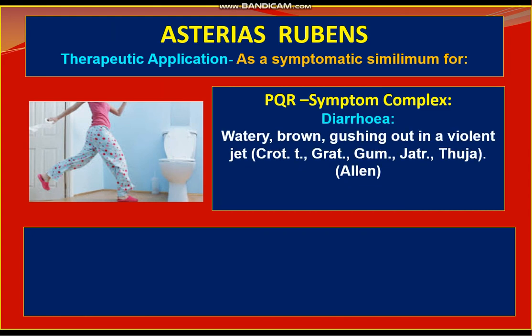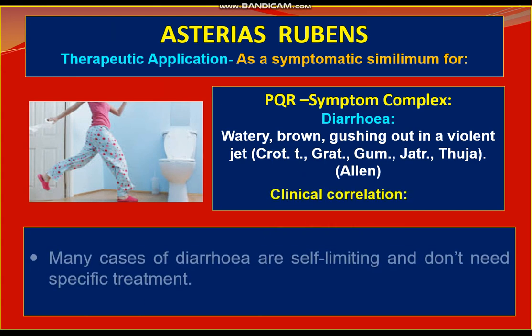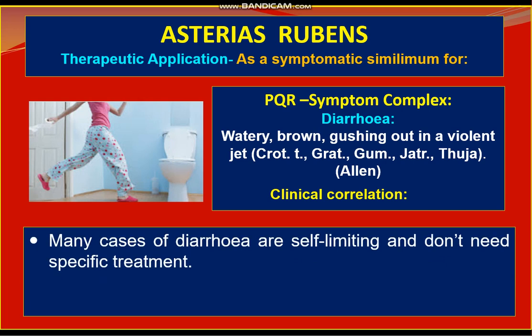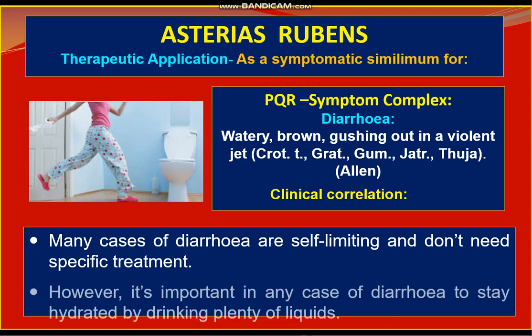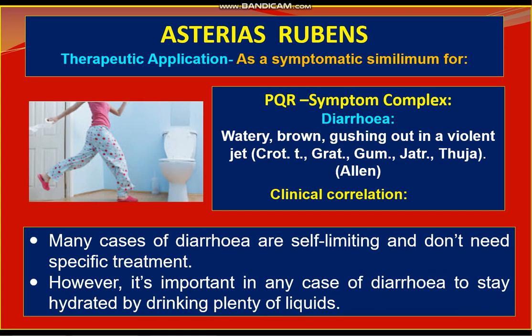The next very important PQRS symptom complex is diarrhea — watery, brown, gushing out in violent jets, similar to Croton tiglium. Many cases of diarrhea are self-limiting and don't need much special treatment; however, it is important in any case of diarrhea to stay hydrated by drinking plenty of water.